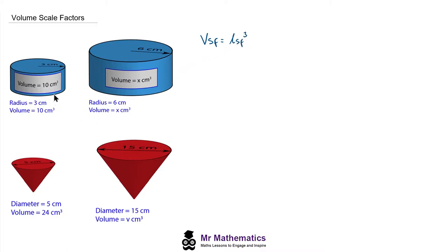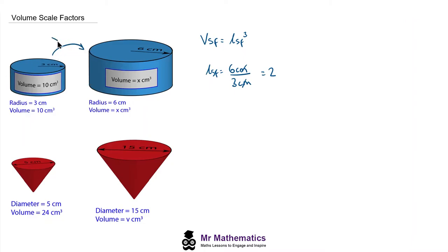We can work out the length scale factor from these two cylinders because we've been given a corresponding pair of radii. The smaller one is 3 centimeters and the larger one is 6 centimeters. We work out the length scale factor by dividing the larger radius by the smaller one: 6 divided by 3 is 2. In terms of length, the larger cylinder is double the size of the smaller one. So now we can work out the volume scale factor by cubing it: 2 cubed is 8.